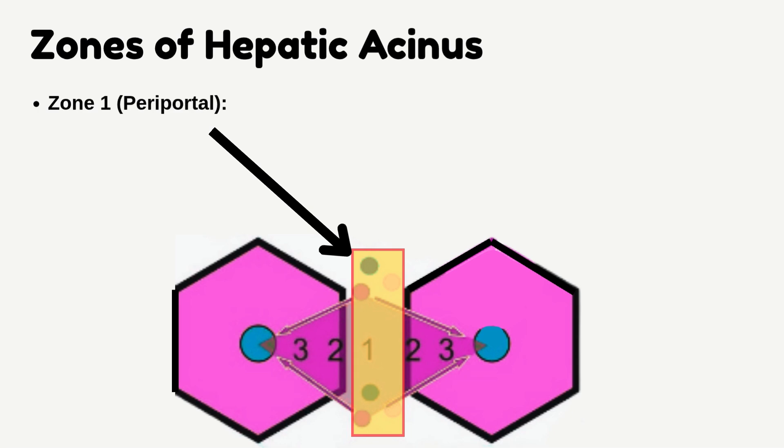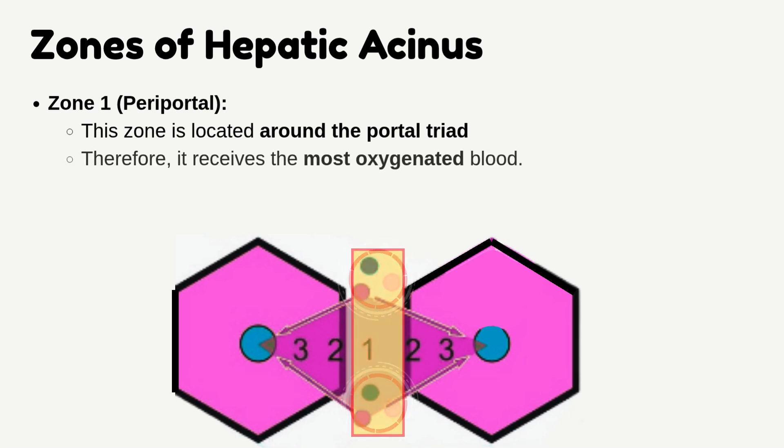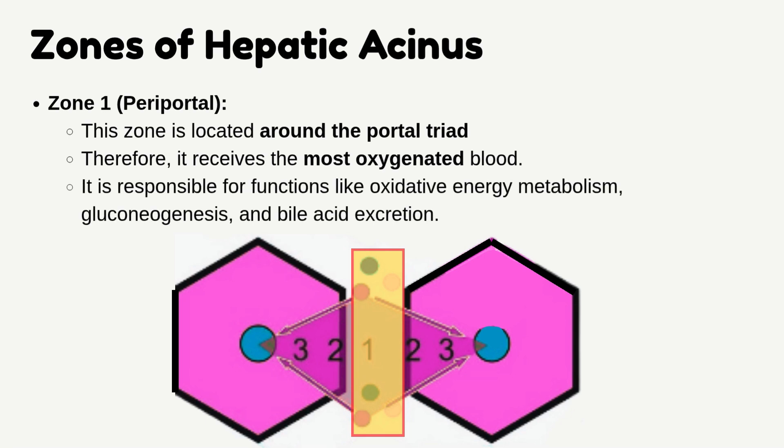Zone 1 is the Periportal zone. This zone is located around the portal triad; therefore, it receives the most oxygenated blood. It is responsible for functions like oxidative energy metabolism, gluconeogenesis, and bile acid excretion.